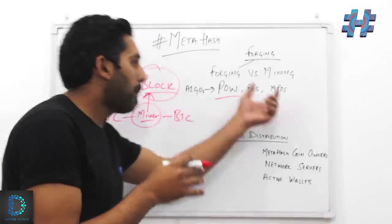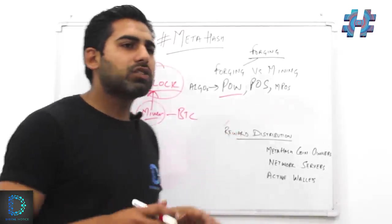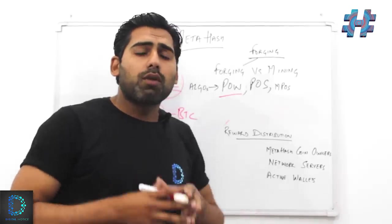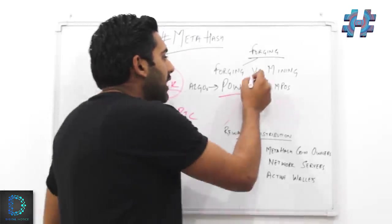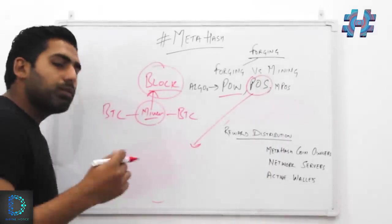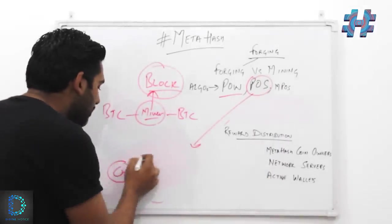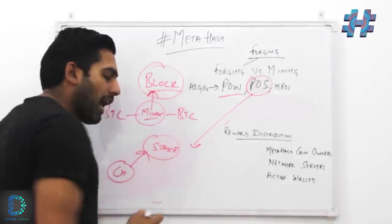When it was realized that proof-of-work had some downsides, like it used to consume a lot of energy for every transaction, proof-of-stake came into existence. In the case of proof-of-stake, any coin holder who wants to be a block generator needs to put some coins on a stake.